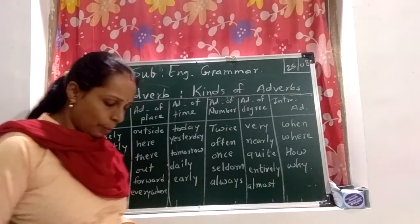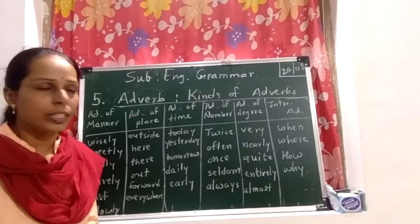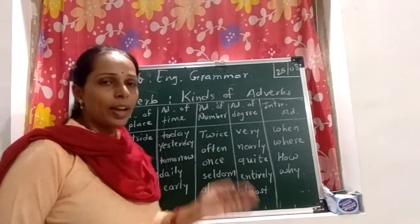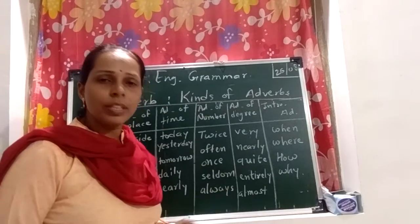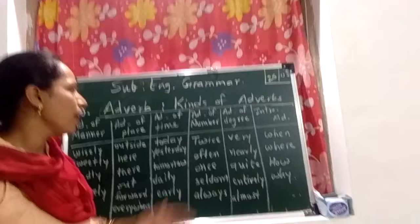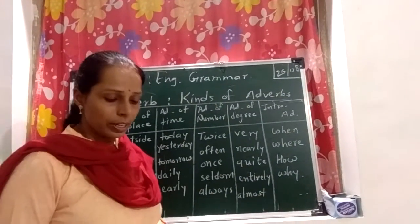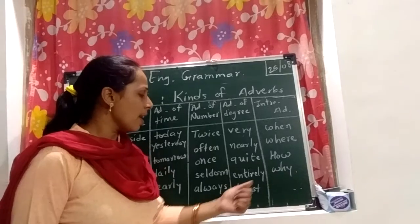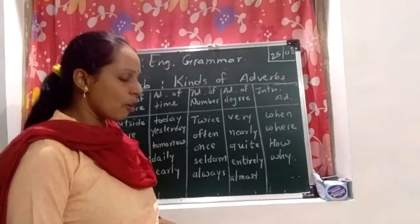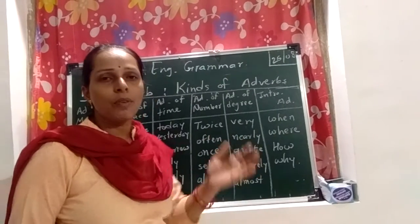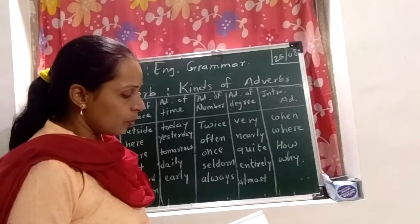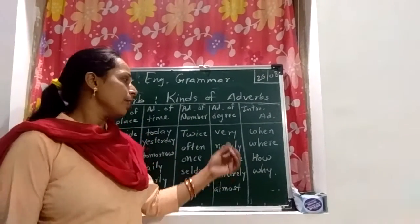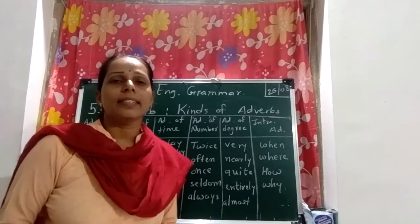The fourth kind is the adverb of number, which shows how often an action is done. For example: how often did the boy strike him? He often came to his house. You are always late. The fifth kind is the adverb of degree. Examples: very, nearly, quite, entirely, almost. For example: he was very tired. He was nearly exhausted. It shows how much or to what extent a thing is done.